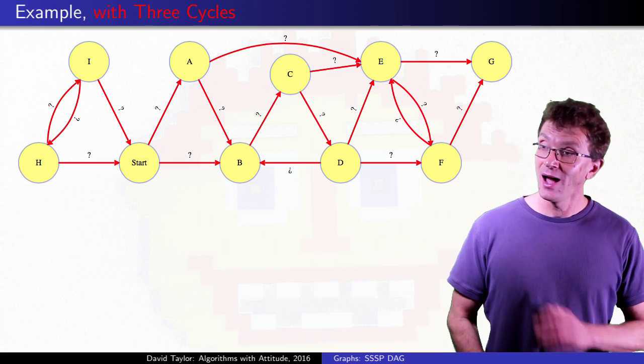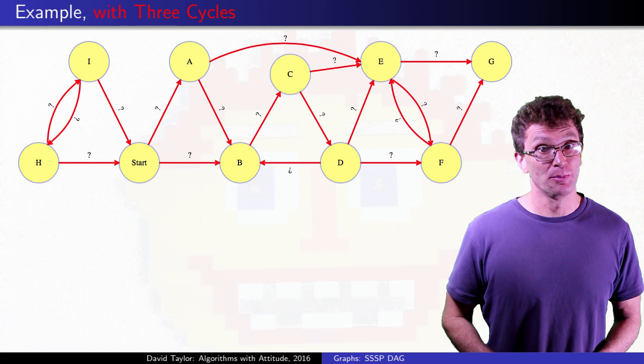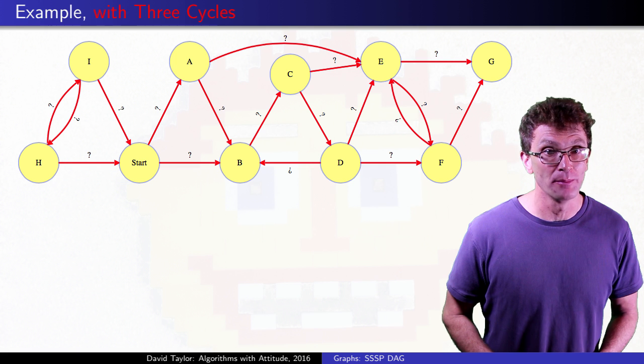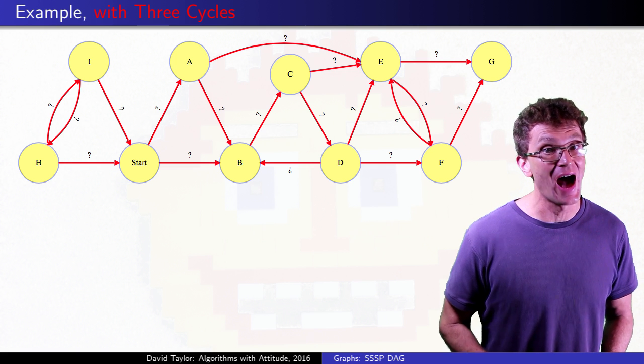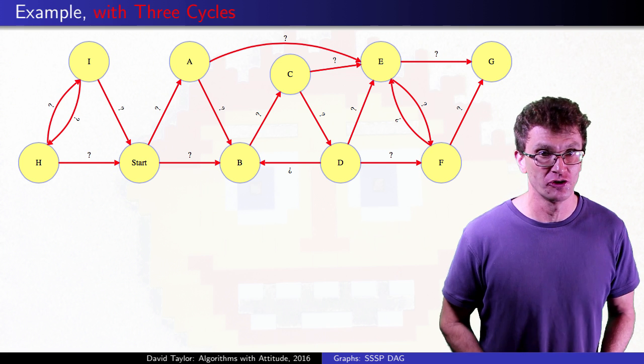The leftmost cycle, hi, won't cause any problems because it isn't reachable from the start, and we can ignore it. The D to B edge also can't cause any problems, as long as its cycle has non-negative total cost. But, the F to E edge might hose us.